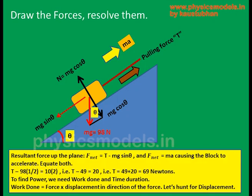Let's draw a sketch first, which will make it clear as to what's happening here. The weight mg is acting down — 98 newtons. The component of the weight is acting backwards, which is mg sin theta, and the pulling force T is in the same direction but opposite, as shown by the brown arrow. The net force is upwards because the block is accelerating upwards. So T minus mg sin theta equals mass into acceleration upwards, which gives T equal to 69 newtons.